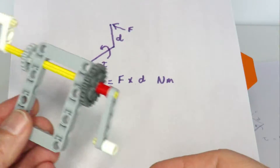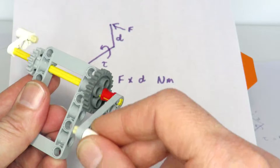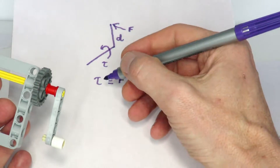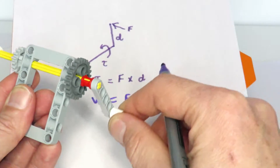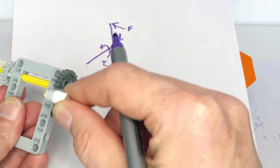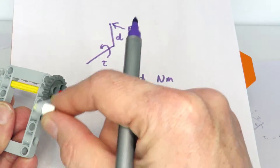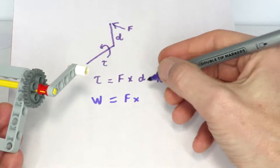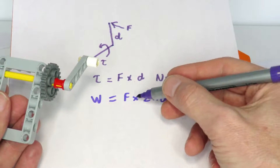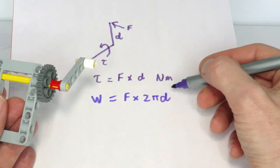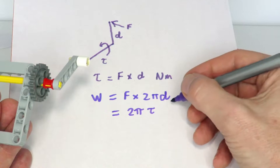Once we start cranking the handle and resisting that torque, we're expending energy and doing work. Work is simply the force applied times the distance traveled. Going around in a circle, the work done per revolution is the force times the distance the end of the handle travels — which is the circumference of a circle, equal to 2π times the radius d. So the work done is force times 2πd, and since force times d equals the torque, we can write this as 2π times the torque, measured in joules.